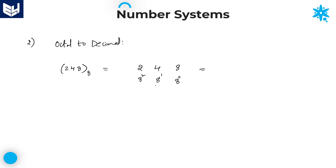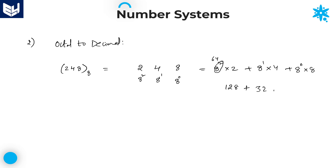Write down the values: 8 squared into 2, plus 8 power 1 into 4, plus 8 power 0 into 8. Now 8 squared is 64, so 64 into 2 is 128. Plus 8 into 4 is 32. Plus 1 into 8 is 8. Now you can add all these three values.